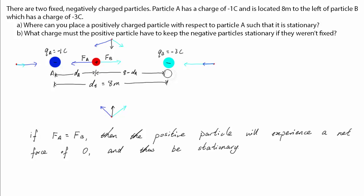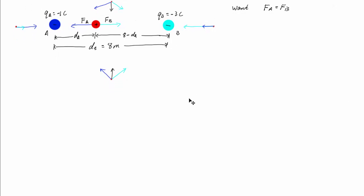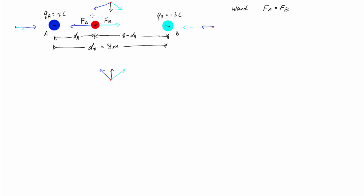Now we know that the force charged particles experience due to each other is given by Coulomb's law. Let the positive charge have a charge of QP, P for positive. So FA equals K times QP times QA divided by dA squared.